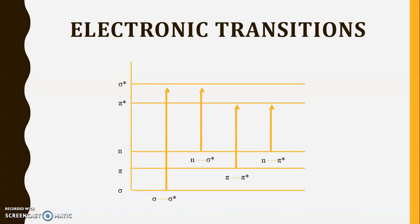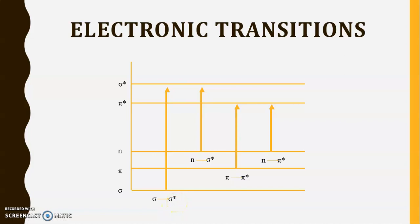This is the typical diagram which shows the different electronic transitions occurring in UV visible spectroscopy. We have seen the n to pi star type of transition as well as the sigma to sigma star type of transition. The n to pi star transition requires very less amount of energy, and due to that they occur at the highest wavelength. The sigma to sigma star transition requires the highest amount of energy, and that's why it occurs at shorter wavelength. The x axis represents wavelength and the y axis represents energy required.